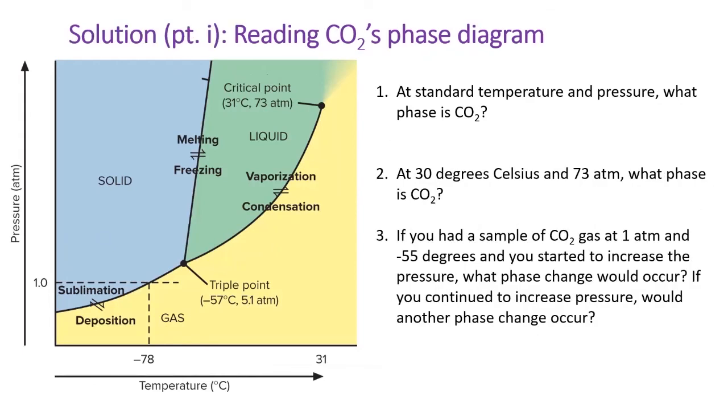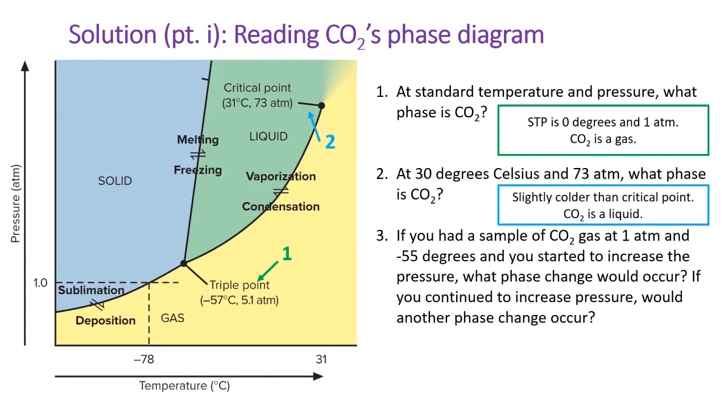To answer the first two questions, we just need to find our coordinates on the map. Standard temperature and pressure is zero degrees Celsius and one atmosphere. This is indicated by the green arrow with a one next to it. CO2 is in the gas phase. At 30 degrees and 73 atmospheres, CO2 is slightly colder than its critical point, indicated by the blue arrow. This is a liquid.